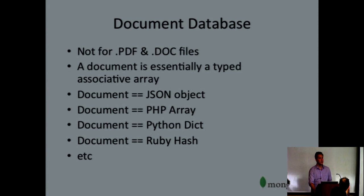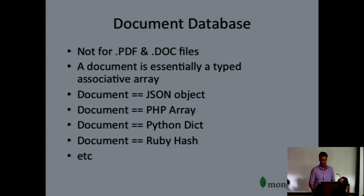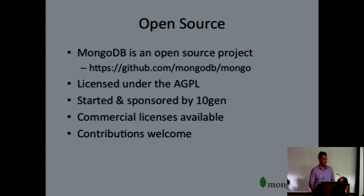For those who haven't used MongoDB — when we say a document database, we're not talking about PDFs or doc files. We're talking about a typed associative array. If you're familiar with JSON, we're talking about JSON documents. If you're familiar with Python, we're talking about nested Python dictionaries, or a Ruby hash or a PHP array. If you have some variant type in one of those languages and you build a recursive dictionary of those, you get something that looks a lot like JSON. That's what we mean by documents.